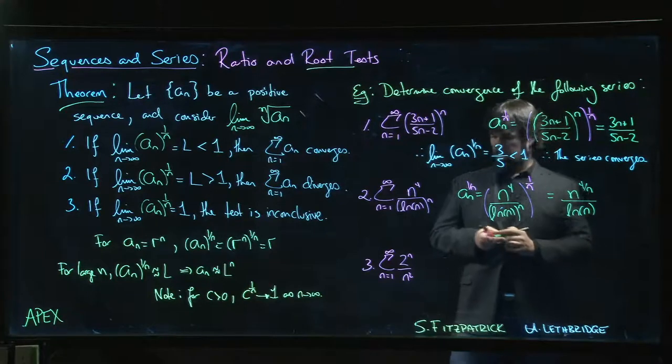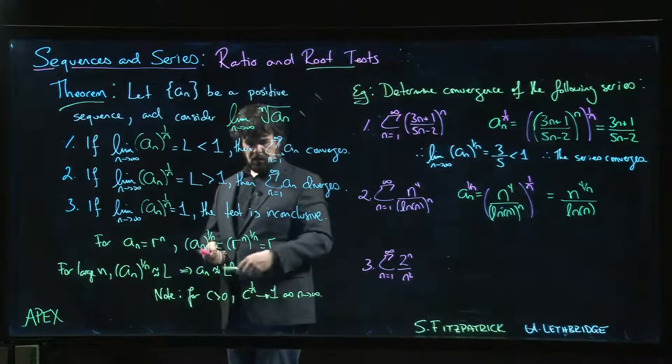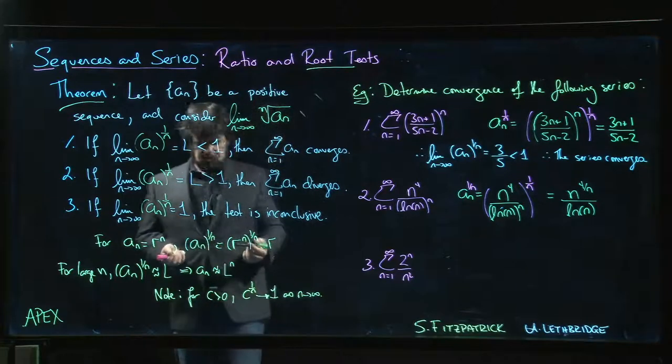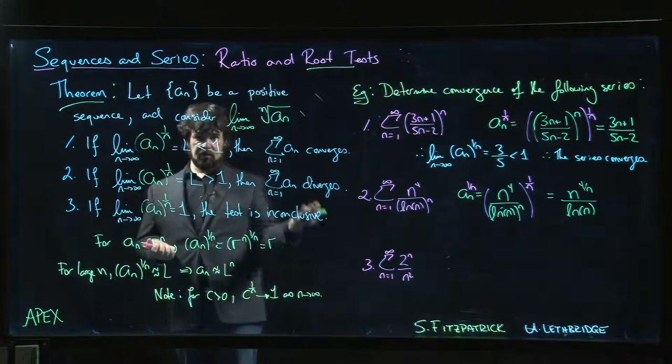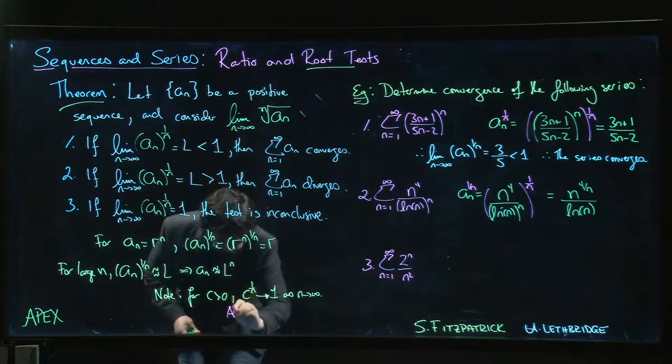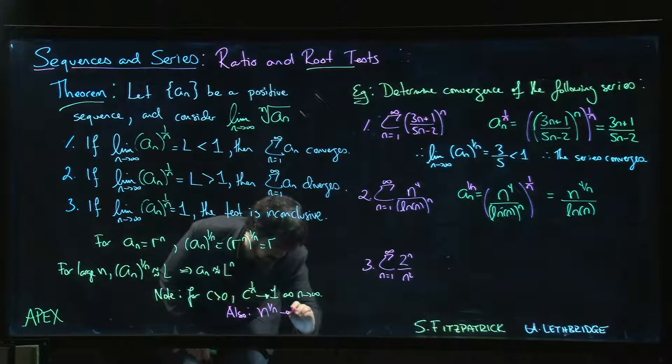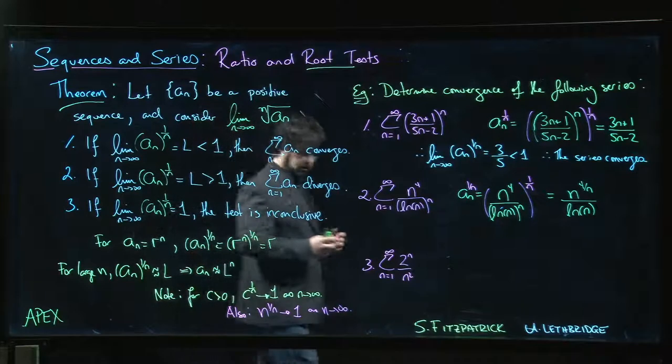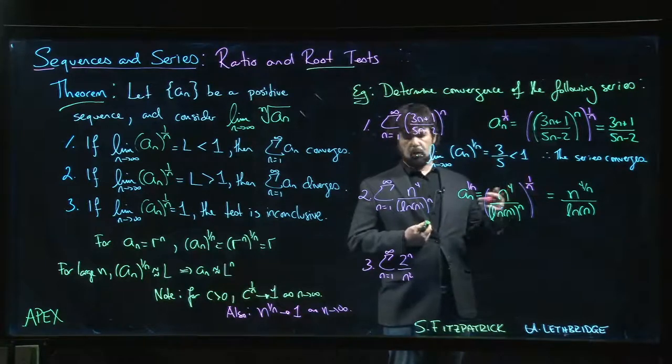We get n to the 4 over n on top, we get the natural log of n on the bottom. Now one of the results, actually I mentioned this before, if you have a constant to the 1 over n you let n go to infinity, that's typically going to go to 1. That's kind of clear. I mean if n goes to infinity, 1 over n is going to go to 0, constant raised to the power of 0 should give you 1. It's actually also true though that if you take n to the power 1 over n, that will also go to 1 as n goes to infinity. And n to the 4 over n will just be n to the 1 over n raised to the fourth power. 1 to the fourth power still 1.